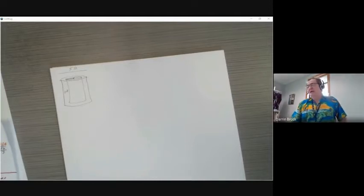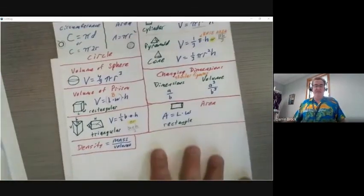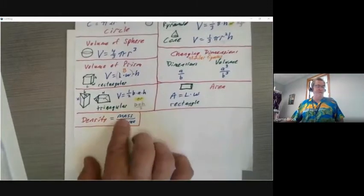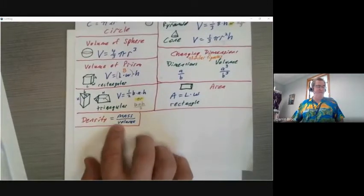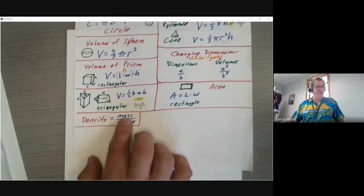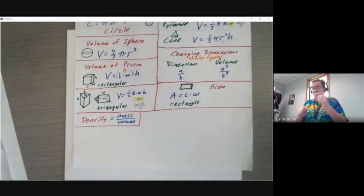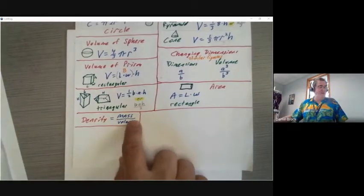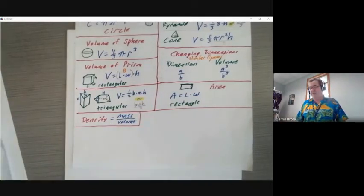There are density problems where you might be given the mass and volume and asked for density, or given density and volume to find mass, or density and mass to find volume. You need to be able to rearrange the density equation to solve for any one of those three variables.